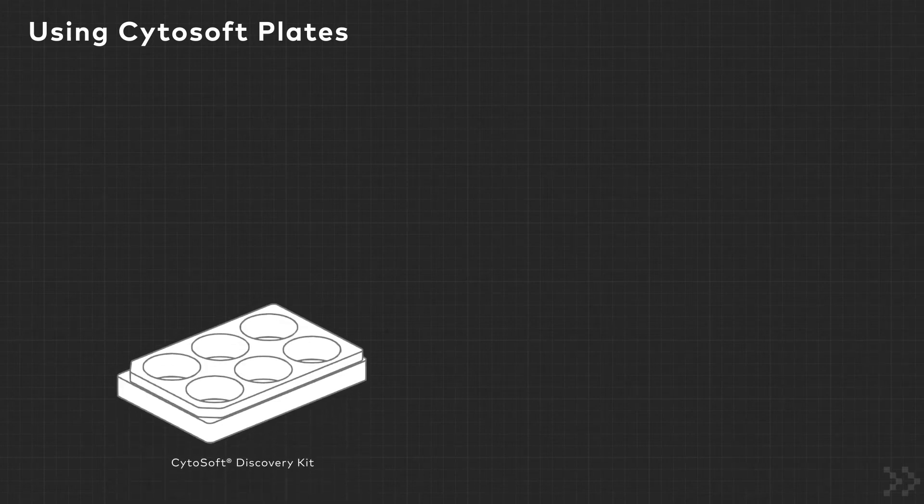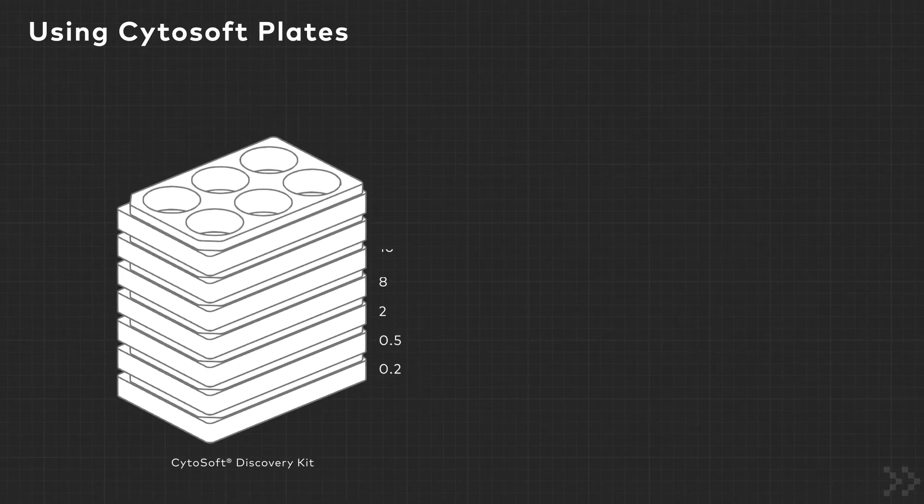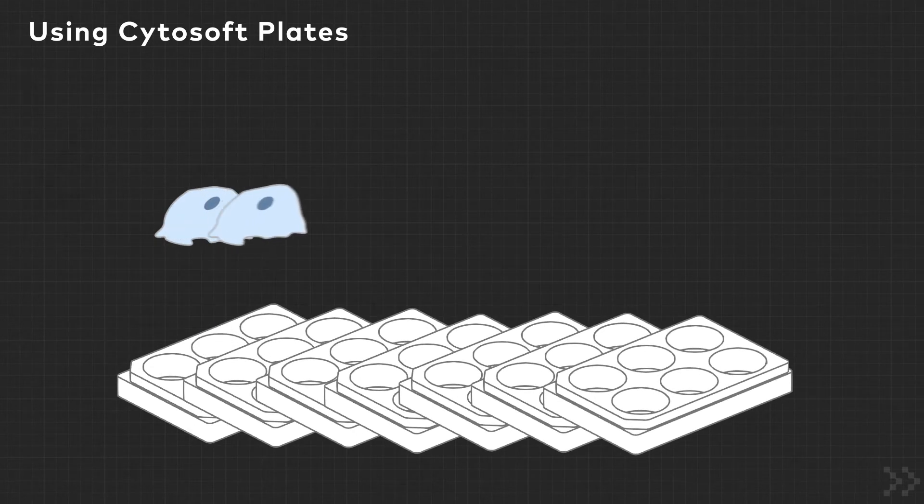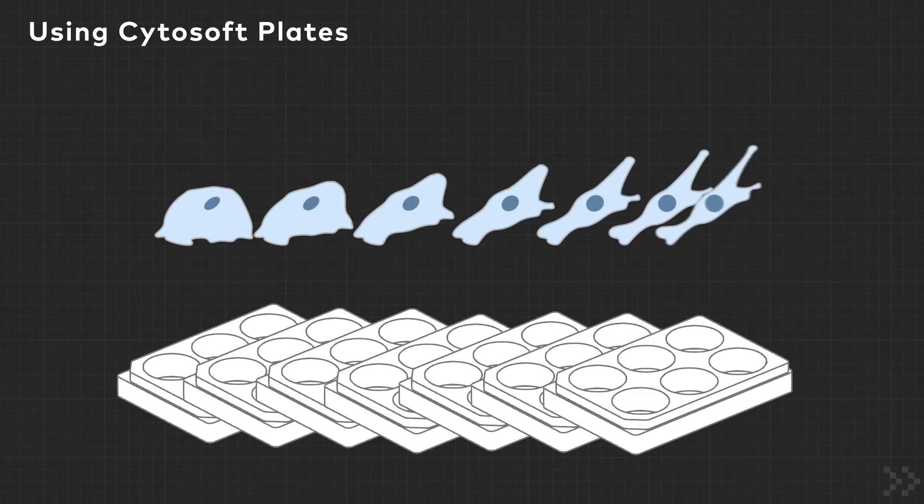To get started with physiologically relevant cell culture, begin with the Cytosoft Discovery Kit. This comes with 7 6-well plates, one of each stiffness. Culture your cells across the broad stiffness range and see how your cells react to different substrates.